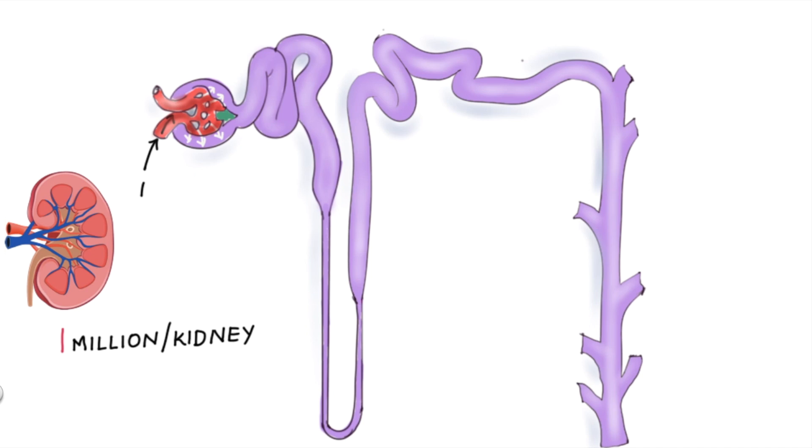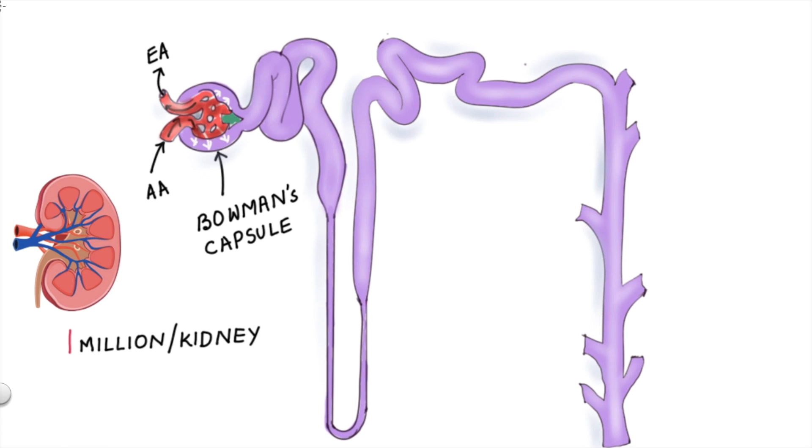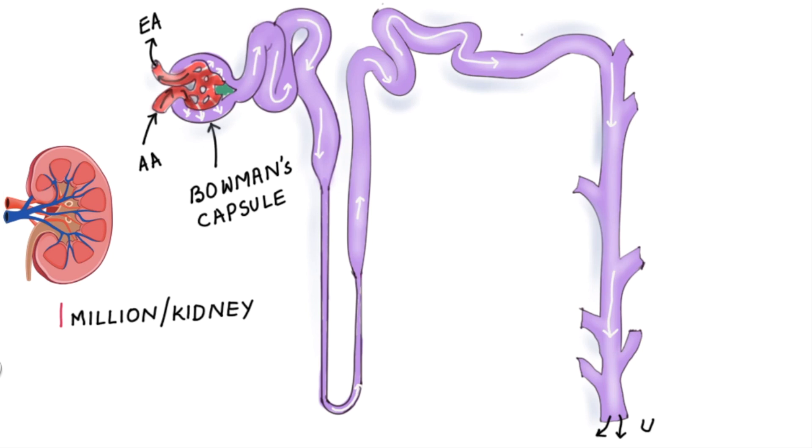At this end of the nephron, blood enters in via afferent arteriole and passes through a network of capillaries called glomerulus and leaves by the efferent arteriole. As this occurs, components of the blood are filtered out into an area known as Bowman's capsule. The filtered components, collectively known as glomerular filtrate, which pass into the tubules, eventually enter the last part, the collecting duct, and exit as urine.